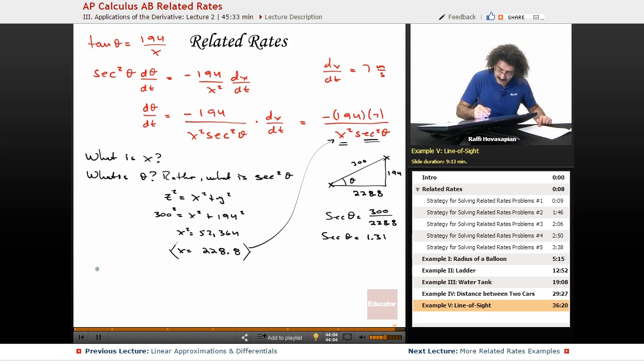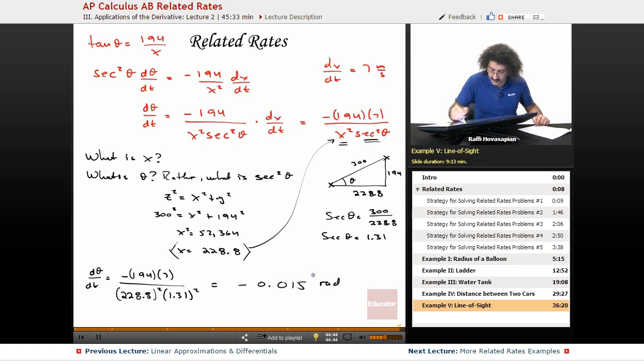So I've got d theta dt is equal to minus 194 times the 7, which was the dx dt. And I'm going to divide that by x squared, so this is going to be 228.8 squared times secant squared theta, 1.31 squared. And when I solve that, I end up with negative 0.015. And this is an angle. It is in radians per second.